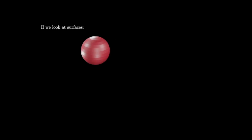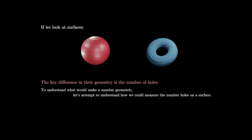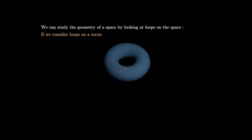If we look at surfaces — for example, the sphere or the torus given by this donut shape — the key difference in their geometry is the number of holes they have. The sphere has no holes at all, while the torus has exactly one hole. One way to study the geometry of a space is by looking at loops on that space. Considering loops on the torus, we see that some loops do not get caught on any part of the geometry and are free to contract and expand as much as they'd like, confined to the surface.